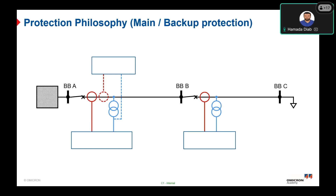Redundant protection philosophy is applied to handle errors in the protection system. We have main protection and backup protection. The purpose of the main protection is to protect a specific segment of the electrical grid, with its limits given by the protection system of the adjacent section. The purpose of the backup protection is to protect the grid segment in case its main protection fails.